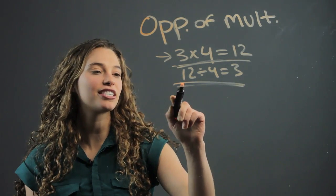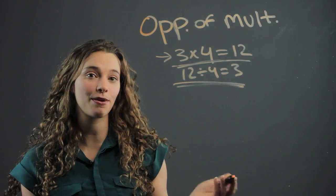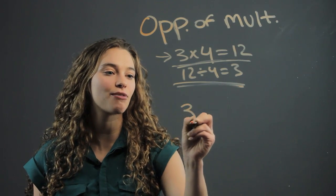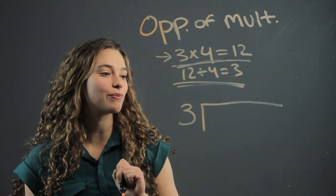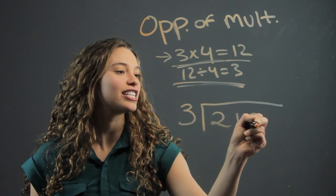Now what happens when it's not something by memory? What happens when we have to line it up as a whole division problem? Let's say we have three into something a little more than twelve. Let's say it's two hundred and ten.